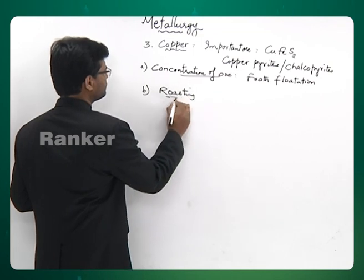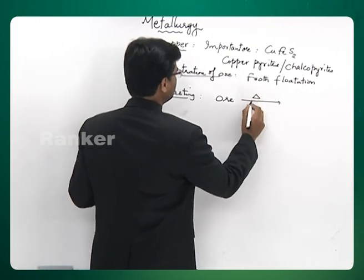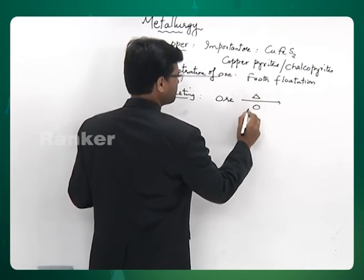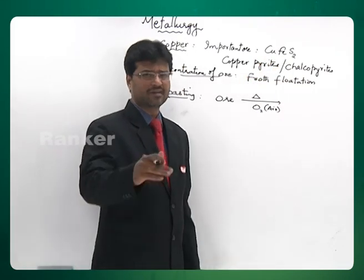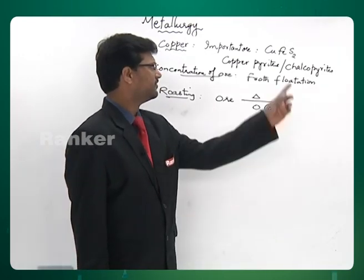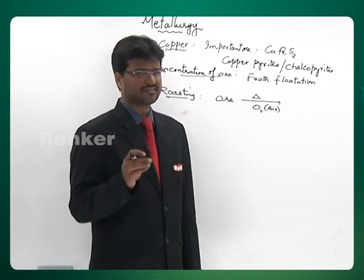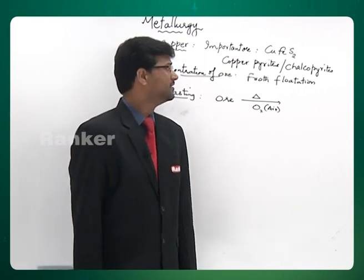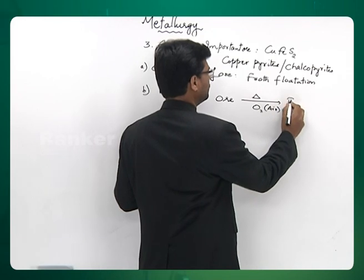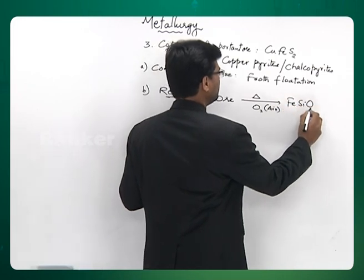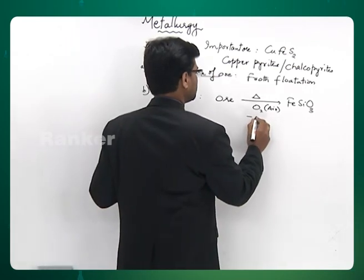The next step is roasting, where the ore is heated in air. Since Fe is more active than copper — Fe is present above copper in the activity series — Fe will get oxidized in preference to copper. As long as FeS (ferrous sulphide) is available, copper sulphide will not get a chance to be oxidized. Here we lose Fe as FeSiO₃ and moisture is lost.